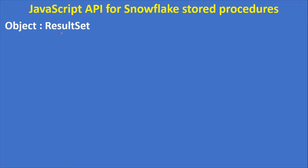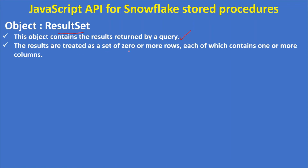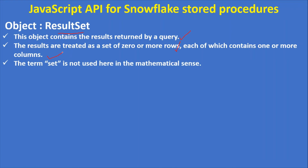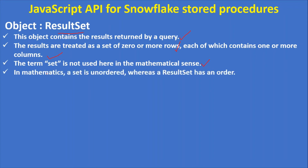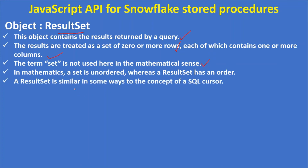The third object from the JavaScript API is ResultSet. This object contains the results returned by a query from the stored procedure. The results are treated as a set of zero or more rows, each containing one or more columns. The term 'set' is not used in the mathematical sense — a mathematical set is unordered, whereas a ResultSet has an order. A ResultSet is similar in some ways to the concept of a SQL cursor in other databases.